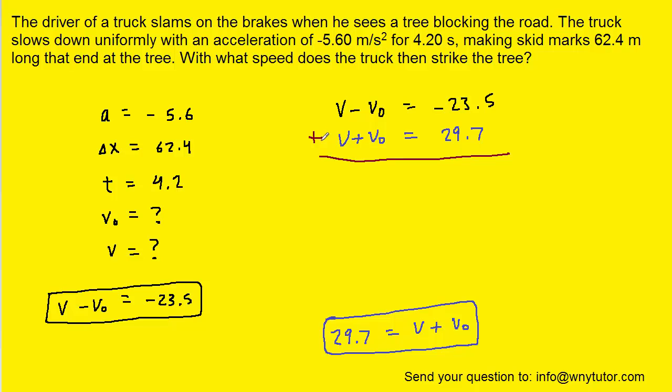If we add the two equations together, we're going to get v plus v, or 2v, and this negative v naught added to the positive v naught would cancel out. And then when we add the negative 23.5 to the 29.7,